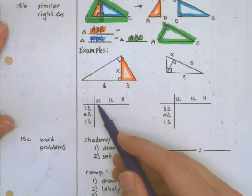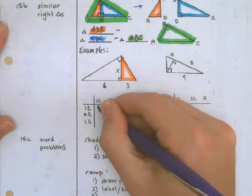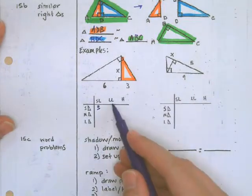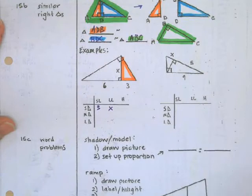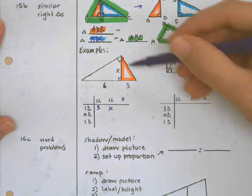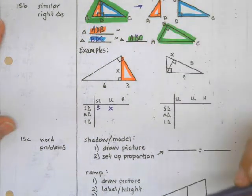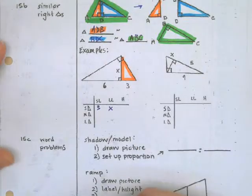SL stands for the short leg and that is three. LL stands for the long leg and that is X. Hypotenuse stands for the longest side, but there is no value or variable there. So I'm just going to leave that spot blank.